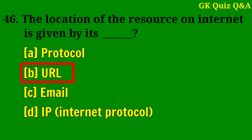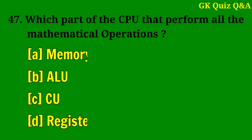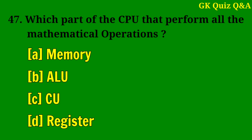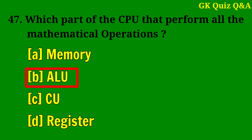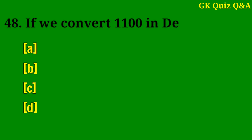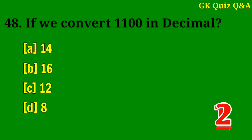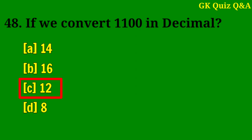The location of a resource on the internet is given by its — Answer B: URL. Which part of the CPU performs all the mathematical operations? Answer B: ALU. If we convert 1100 in binary to decimal — Answer C: 12.